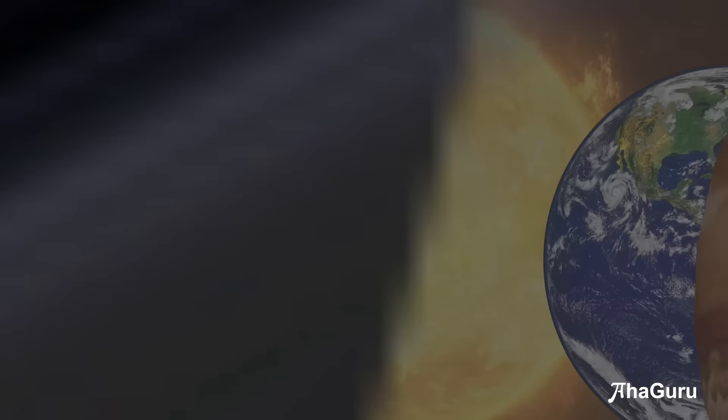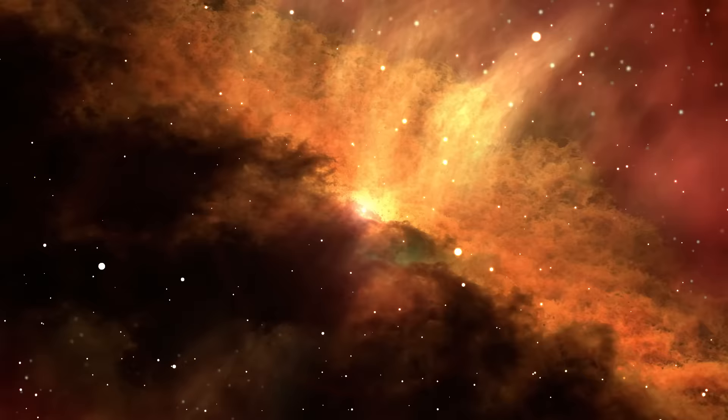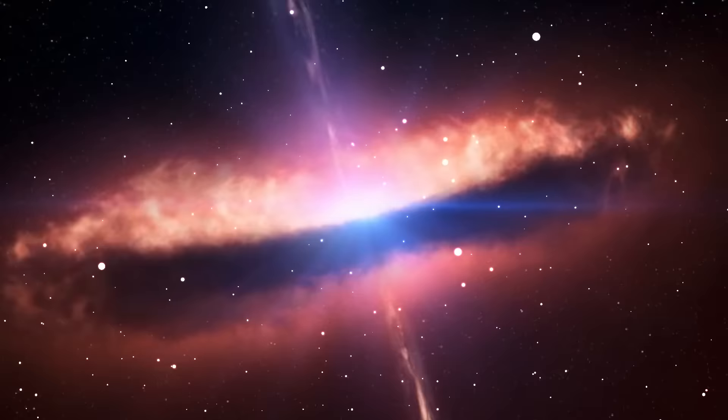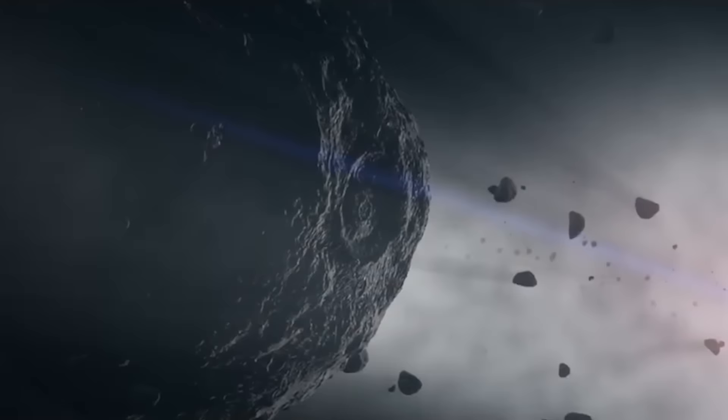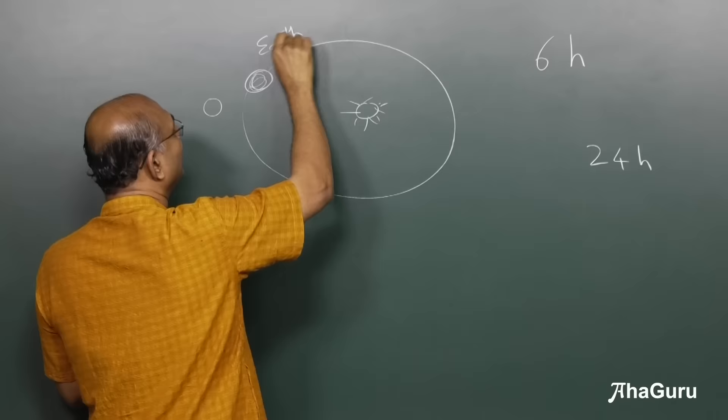Earth formed along with the Sun as part of the solar system. The solar system started as a gas cloud that condensed — the centerpiece became the Sun, and various rocks came together to form what would become the Earth. This early Earth was called Gaia.